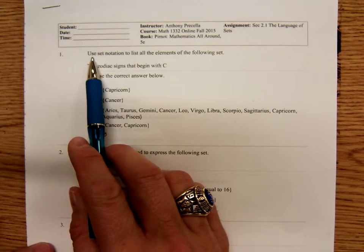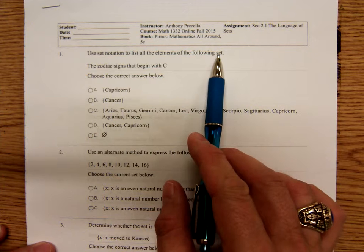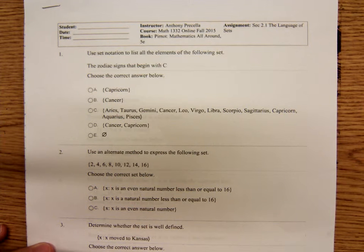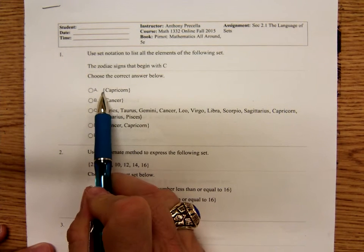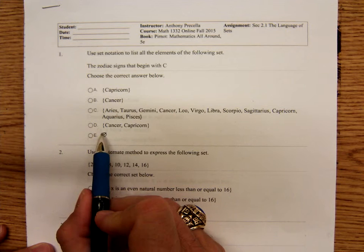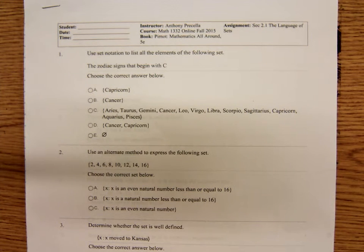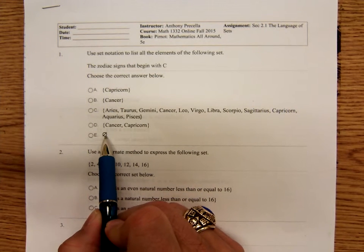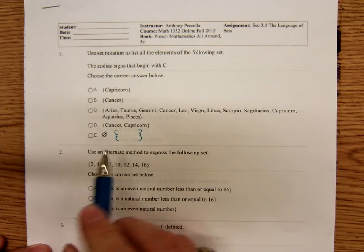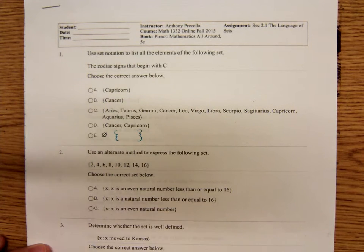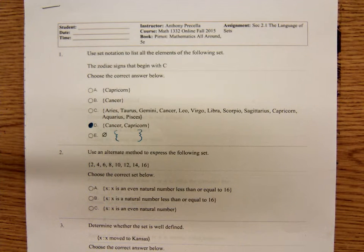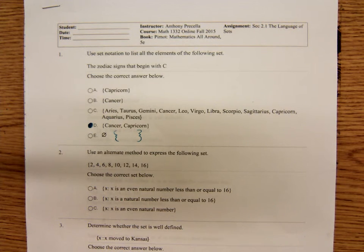Here, use set notation to list all elements of the following set. The zodiac signs that begin with C. Well, we just want to write them out. Notice with sets we put set braces around them and there's not a lot of work on this one. This symbol, by the way, do you remember what it means if you listen to Rebecca and look through the book? This is the empty set. That would be a set that has nothing in it. That would be the same as this. A set that has nothing. But what signs of the zodiac begin with C? Well, Cancer and Capricorn.